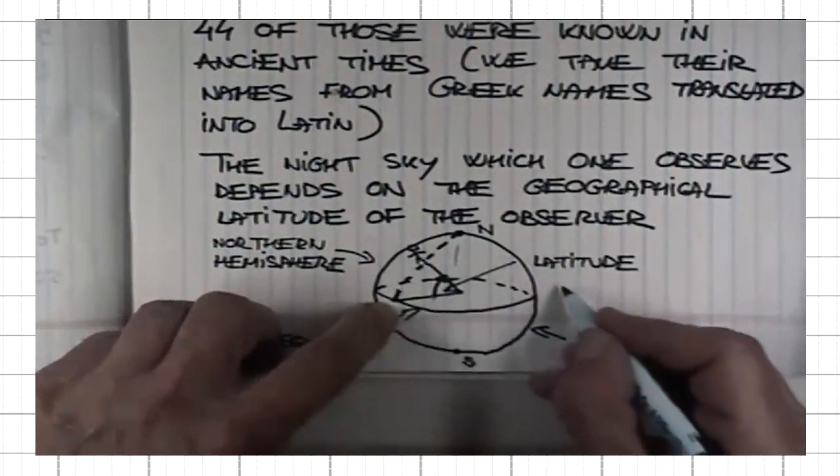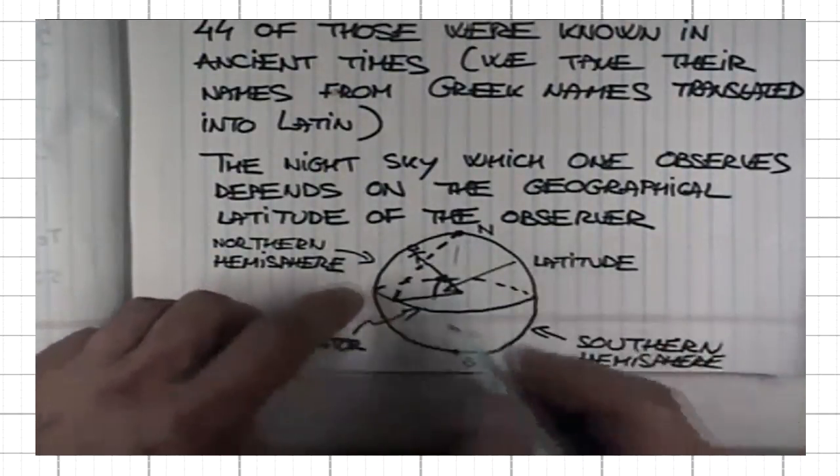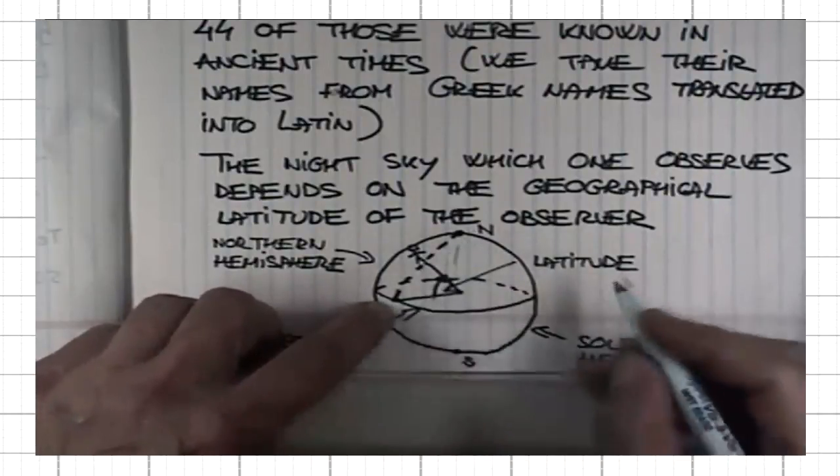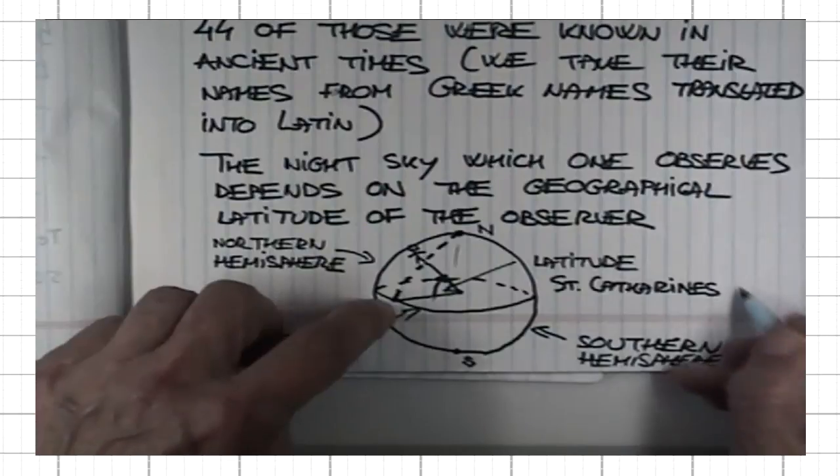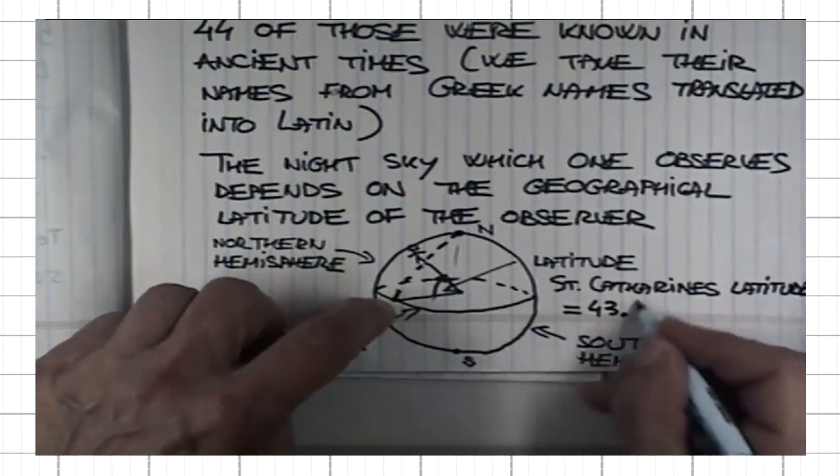For St. Catherine's, which is halfway between equator and the North Pole, is 43.167 degrees.